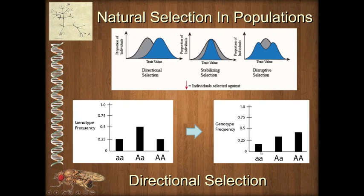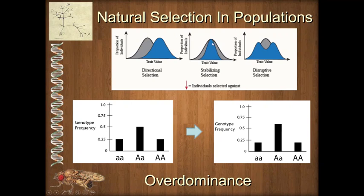When we look at the two-allele version analogous to stabilizing selection, we call it overdominance. The classic example is malaria and sickle cell anemia trait, where the heterozygotes do better when malaria is present than either of the homozygotes. You can't make a heterozygote without having some of either homozygote in the population, so what usually happens is we reach a balance point. We end up with the heterozygote being the most common phenotype — it's like making a hill in the middle.